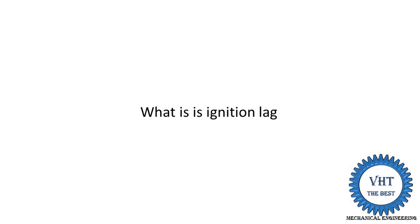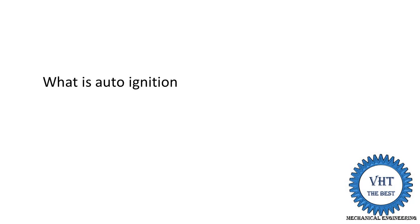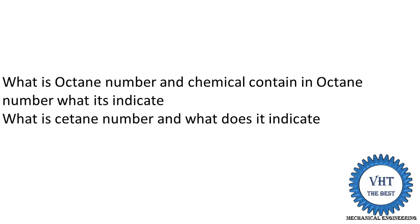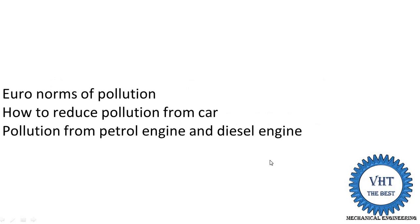What is ignition lag? What is auto ignition? What is octane number and what chemical is contained in it? What is indicated power? What is cetane number and what does it indicate? Octane number is used for petrol; cetane number is used for diesel. Octane number indicates the knocking intensity; cetane number indicates similarly.